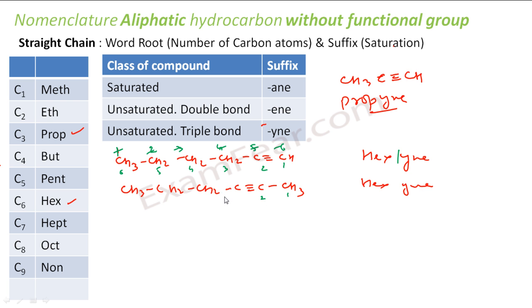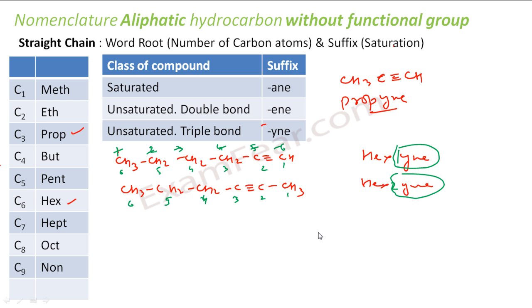In the other scenario where the triple bond is in the middle, we again start from the end that gives it a lower number. If numbering from the right gives it position two, it becomes hex-2-yne. So for long chains, the placement of the triple bond or double bond matters, and you specify its position by giving it the lowest possible number.